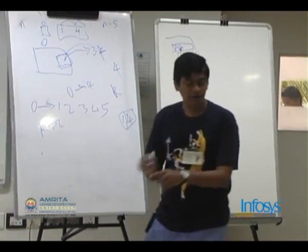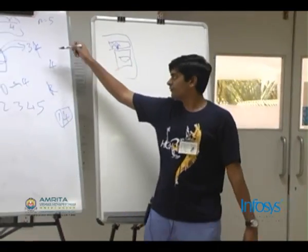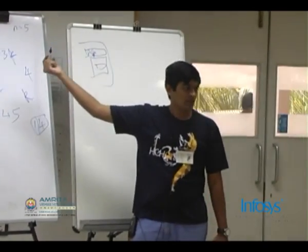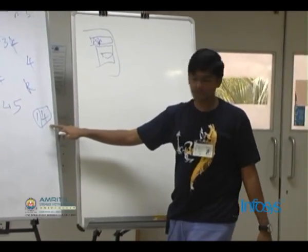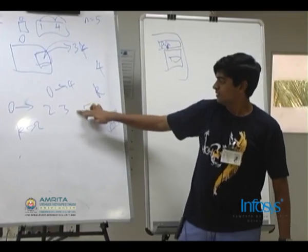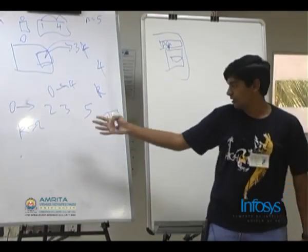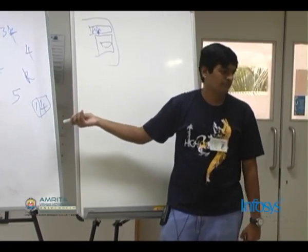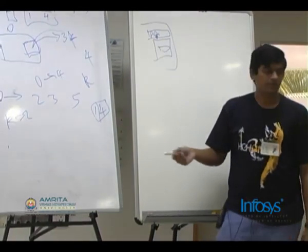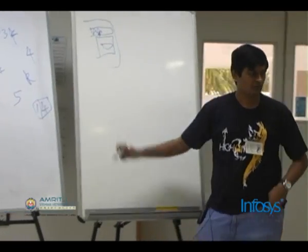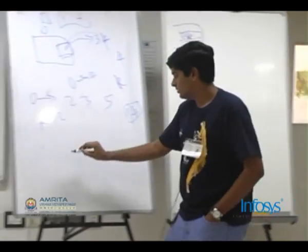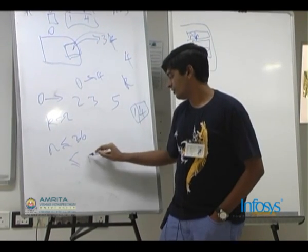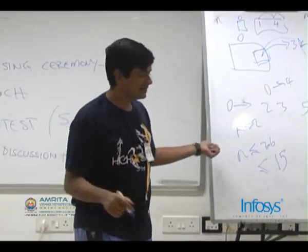The constraints are: n is less than or equal to 36, and the number of neighbors for each friend is less than or equal to 15. So think about it for a minute. The question is: find the probability that you will be able to complete the tour, assuming that you play the optimal strategy.